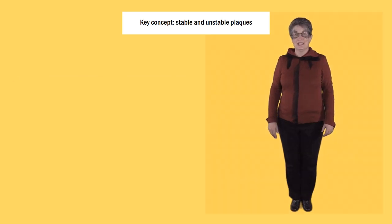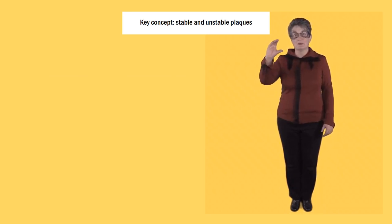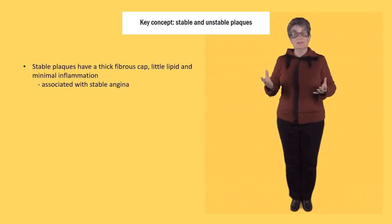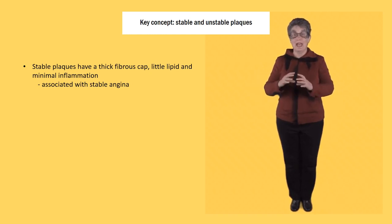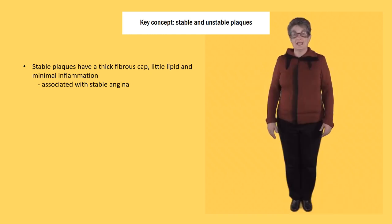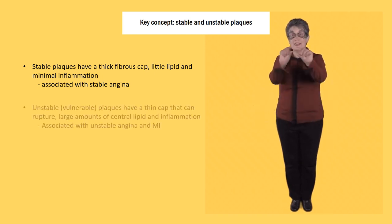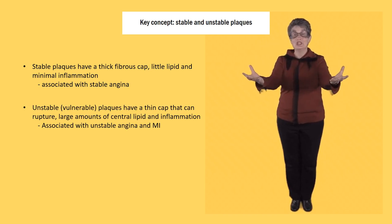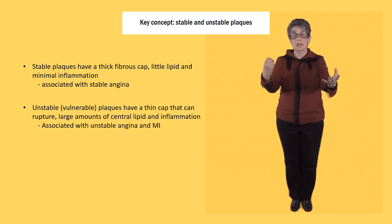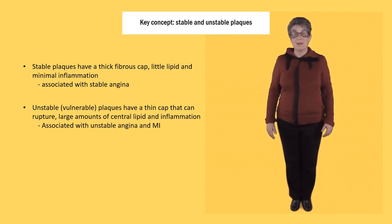Another key concept is that of stable and unstable plaques. Stable plaques have a very thick fibrous cap, a little lipid, and minimal inflammation. They're associated in the coronary arteries with stable angina. Unstable or vulnerable plaques have a very thin cap that can easily rupture and release large amounts of central lipid and inflammation causing blood clots. They're associated with unstable angina and myocardial infarction.